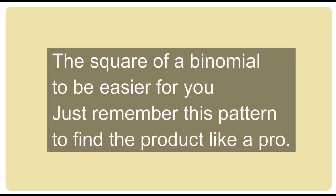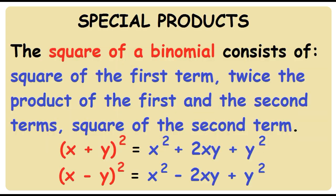The square of a binomial — to be easier for you, just remember this pattern, find the product like a pro. The square of a binomial consists of: square of the first term, twice the product of the first and the second terms, square of the second term.